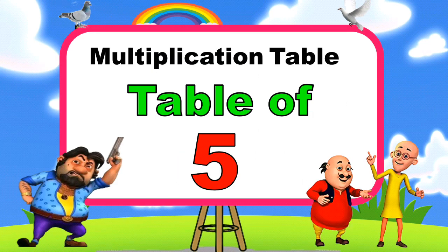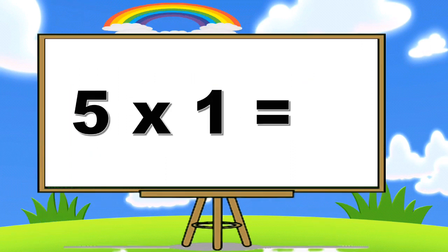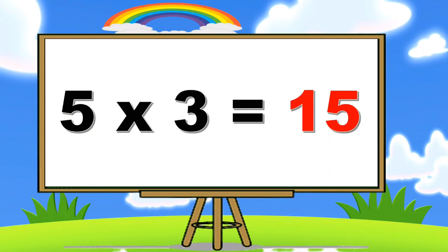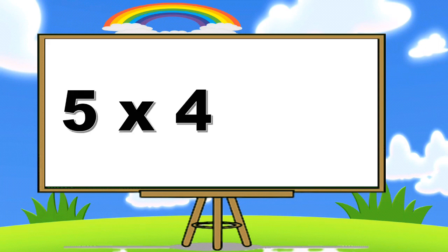Table of five. Five ones are five, five twos are ten, five threes are fifteen.